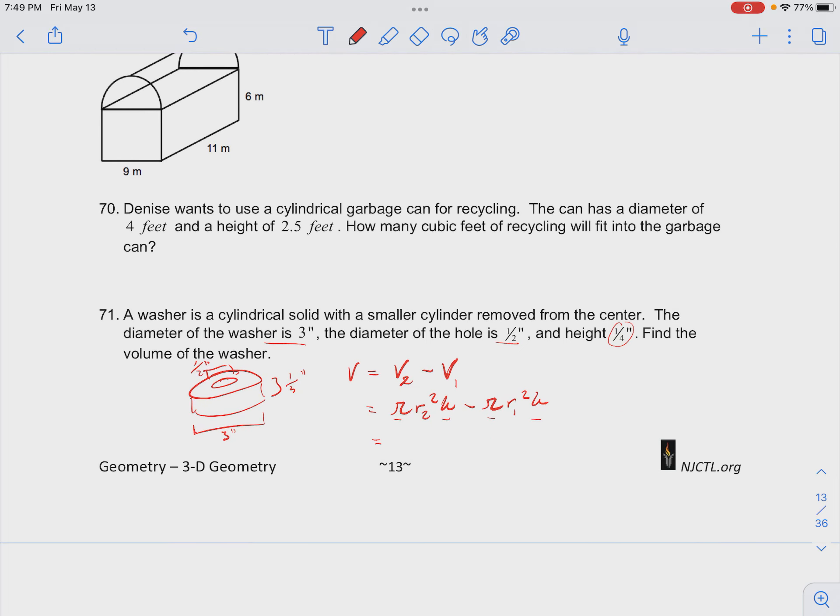So we have πh times r₂² minus r₁² for our total volume. So that is going to be equal to π times h is 1/4.